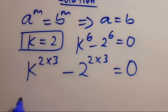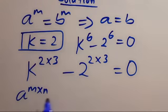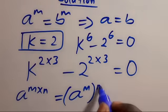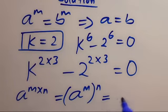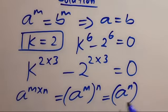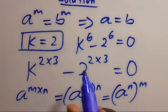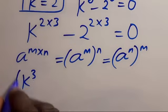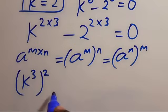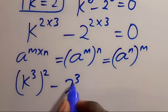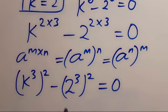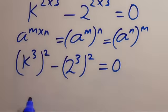We recall that from the law of indices, a to the power of m times n can be simplified as a to the power of m, raised to the power of n — we can interchange the powers. Applying this here, we get k to the power of 3 in parentheses to the power of 2, minus 2 to the power of 3 in parentheses to the power of 2. This is a perfect square — a difference of two squares.